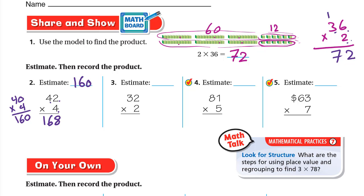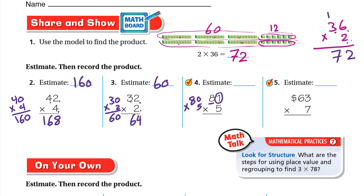For 2 × 32: estimate by rounding — to the right of 3 is 2, weak, so keep it 30. So 2 × 30: write the zero and 2 × 3 = 6, giving an estimate of 60. Multiply using regrouping: 2 × 2 = 4, then 2 × 3 = 6. Answer: 64. For 5 × 81: estimate — to the right of 8 is 1, weak, so keep it 80. So 5 × 80: write the zero and 5 × 8 = 40, giving an estimate of 400. Multiply: 5 × 1 = 5, then 5 × 8 = 40. Answer: 405.